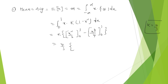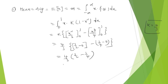Substituting the upper limit 1: x squared by 2 gives 1 by 2, and x to the power 4 by 4 gives 1 by 4. So we get 4 by 3 multiplied with (1 by 2 minus 1 by 4), which equals 4 by 3 multiplied with 1 by 4. The 4s cancel, giving E of x equal to 1 by 3. This is how we calculate the mean value as x into f of x dx for a continuous random variable.